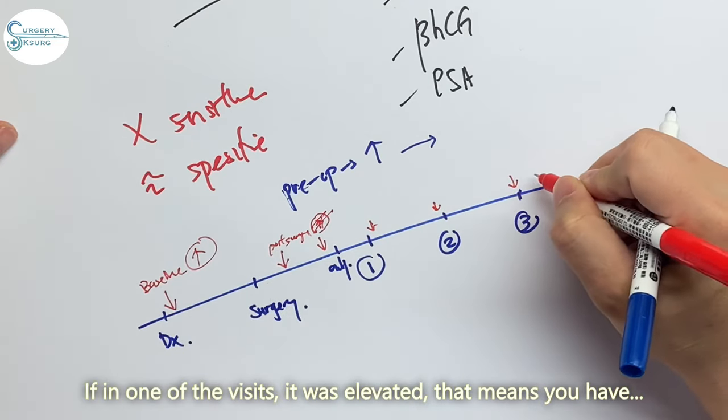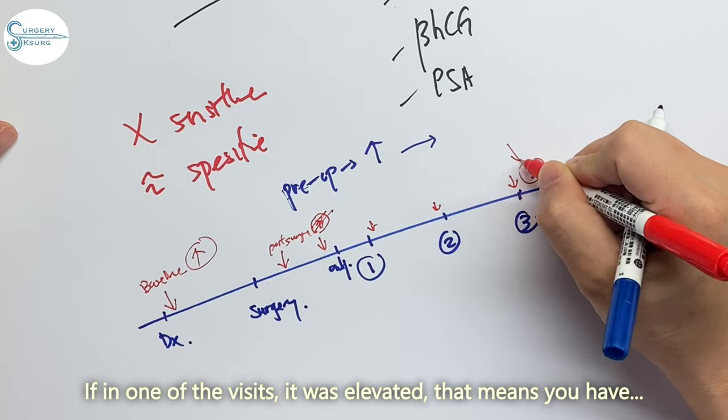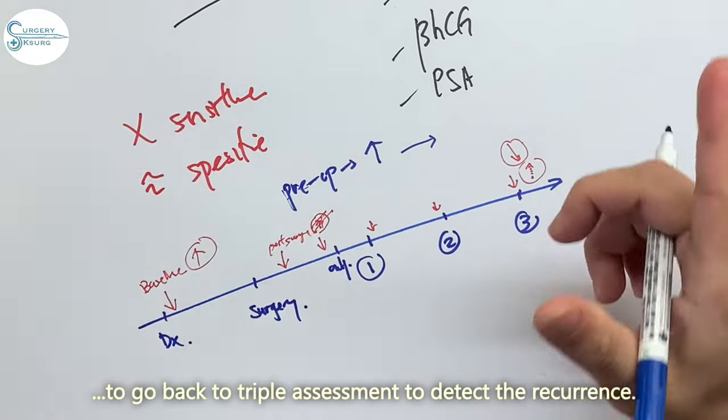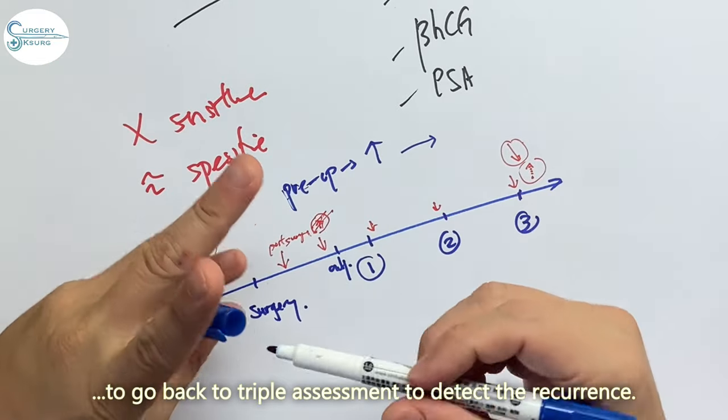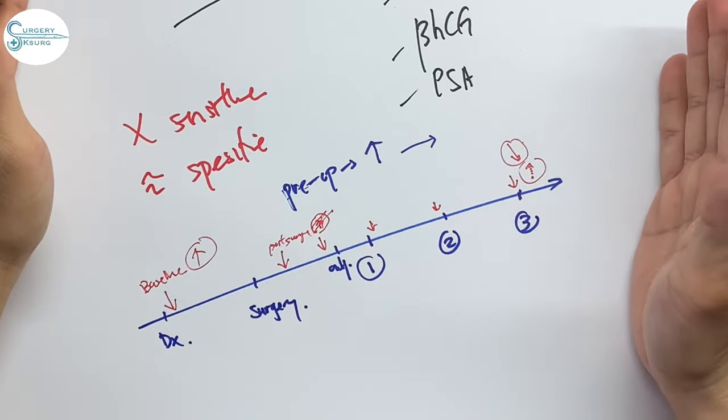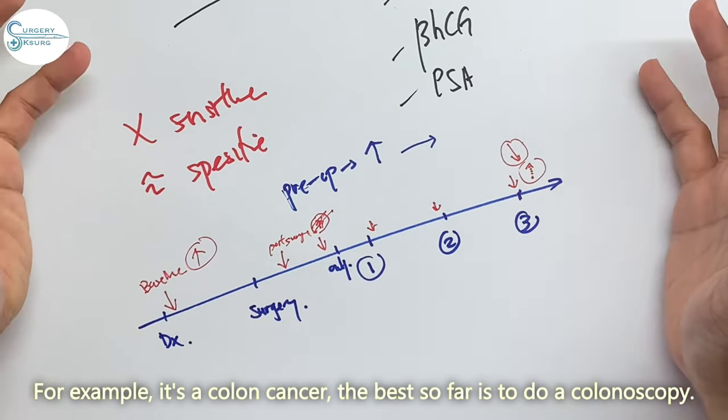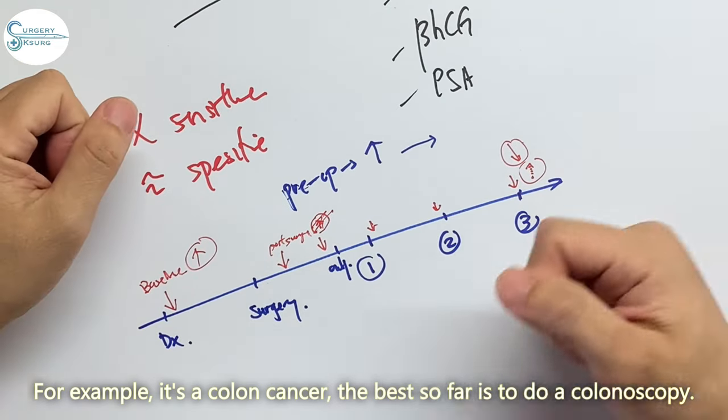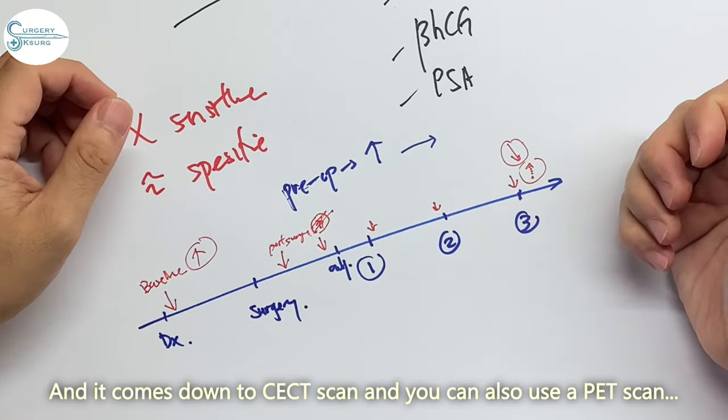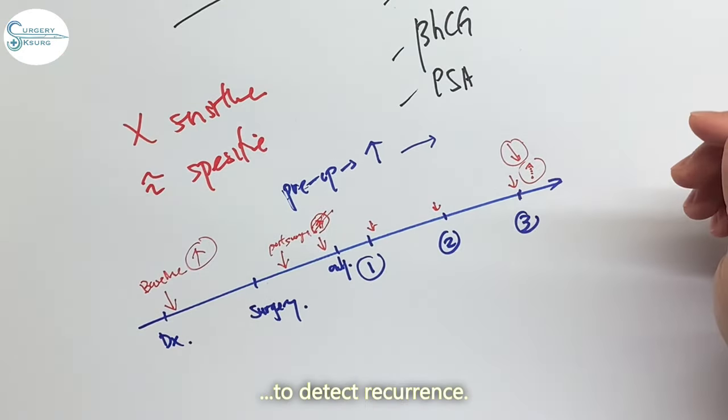If on any visit it was elevated, that means you have to go back to triple assessment to detect the recurrence. So what modalities to be used? It depends. It depends on what cancer. For example if it's colon cancer, the best so far is still a colonoscopy. And you come down to a CT scan. You can also use a PET scan to detect recurrence.